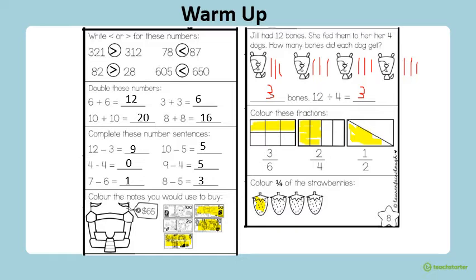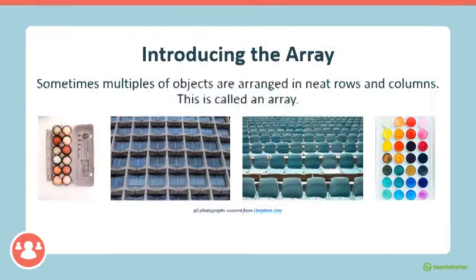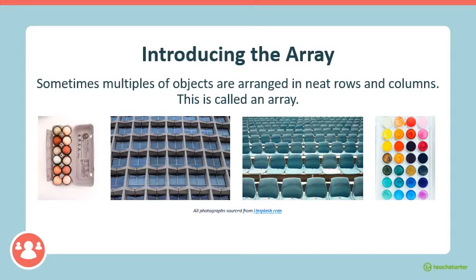Yesterday in maths we were learning about multiplication and equal groups. Today we're going to continue to learn about multiplication, but we're going to introduce the array. Some multiples of objects are arranged in neat rows and columns. This is called an array. Some examples you might see of an array are a carton of eggs, some seats in a football stadium, or some paints in a paint palette.